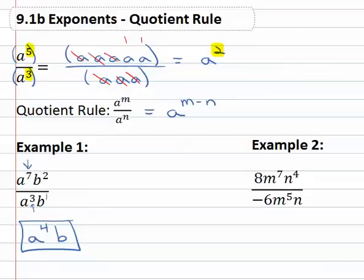Let's take a look at another example. In example two, we have eight m to the seventh n to the fourth over negative six m to the fifth n. First with the numbers, because there's no exponents here, just numbers, we'll reduce those like always. Both are divisible by two, leaving four over negative three.